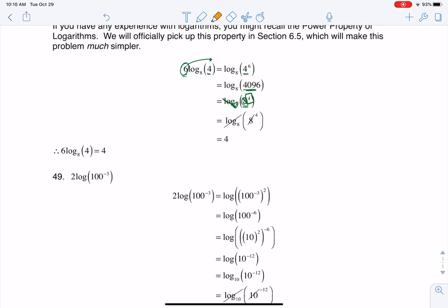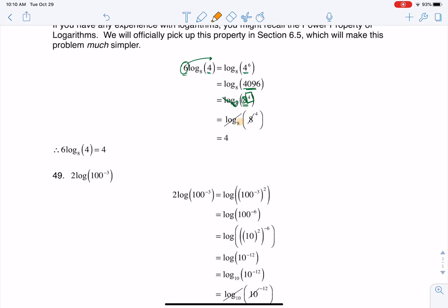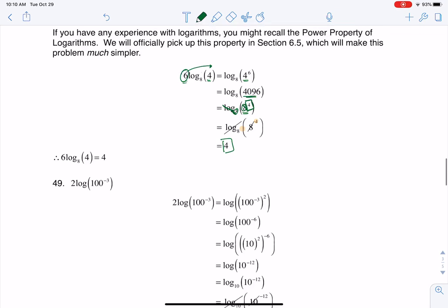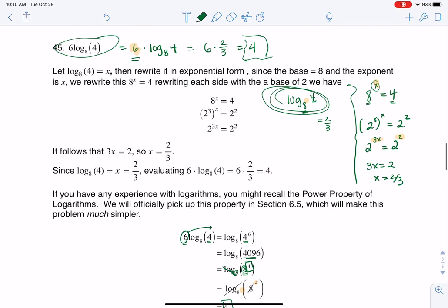Because literally, what exponent would I need on 8 to get to 8 to the 4th? Well, that answer is 4. That's the exponent I need. So the power property makes it a little bit simpler. But we can still do it without the power property.